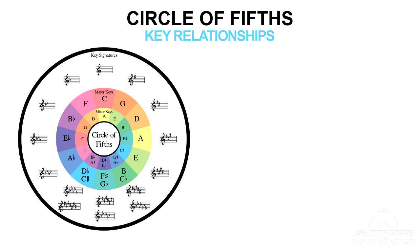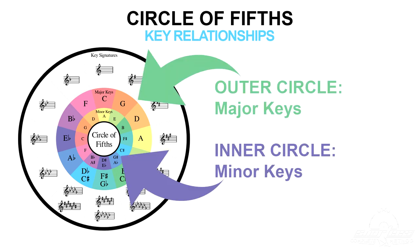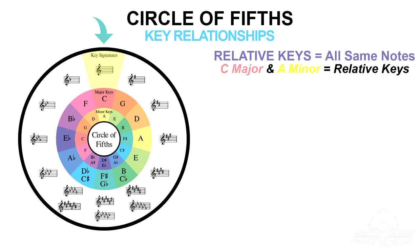Up to this point we've just been dealing with the outside of the circle — these are all major keys. The keys on the inside of the circle are minor keys. Each minor key on the inside of the circle is relative to the major key on the outside because both keys share all the same notes with each other. This means that as a DJ you can mix and transition back and forth between relative major and minor keys super easily.